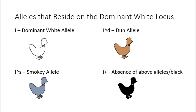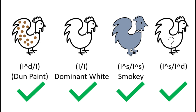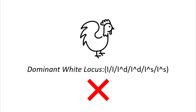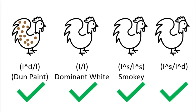Because dun and dominant white are on the same locus, a chicken cannot be homozygous for dominant white and dun at the same time. There could be one dun allele and one dominant white allele, or two dominant white alleles, or two smoky alleles, or one smoky and one dun allele, etc. But there can never be two dominant white alleles and two smoky alleles and two dun alleles at the same time, because they are all allelic to each other — meaning they all occupy the same locus, but a locus only fits two alleles.